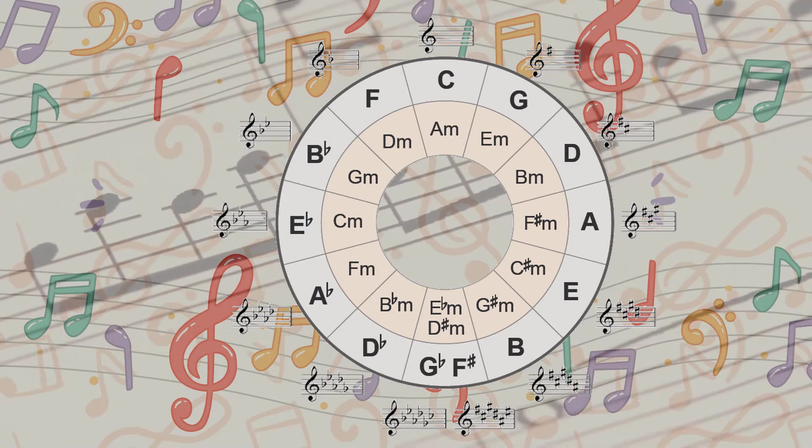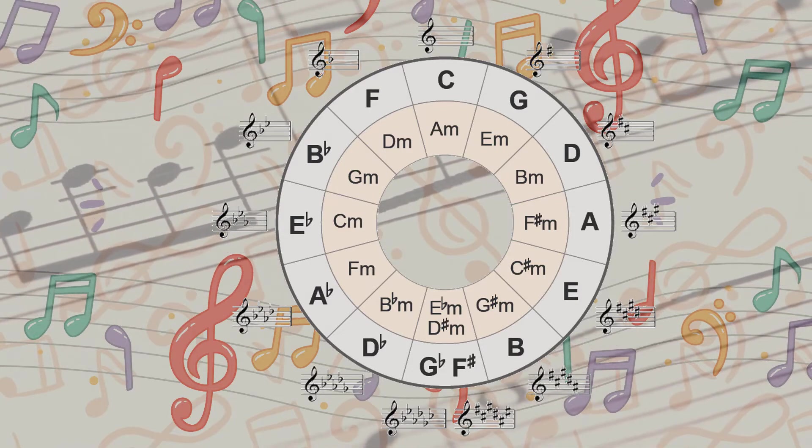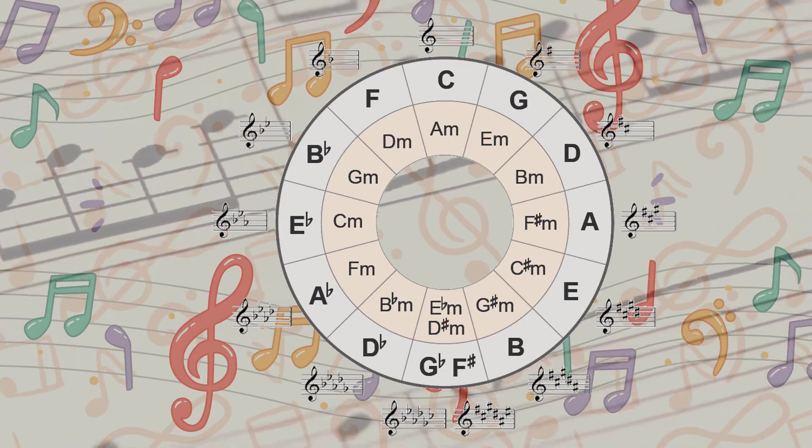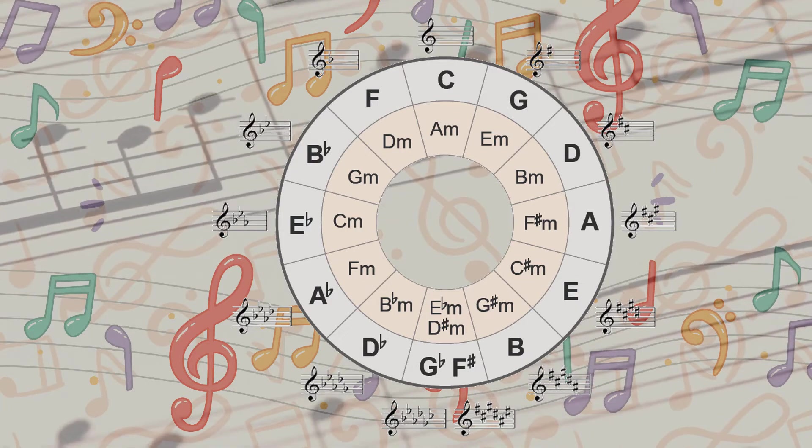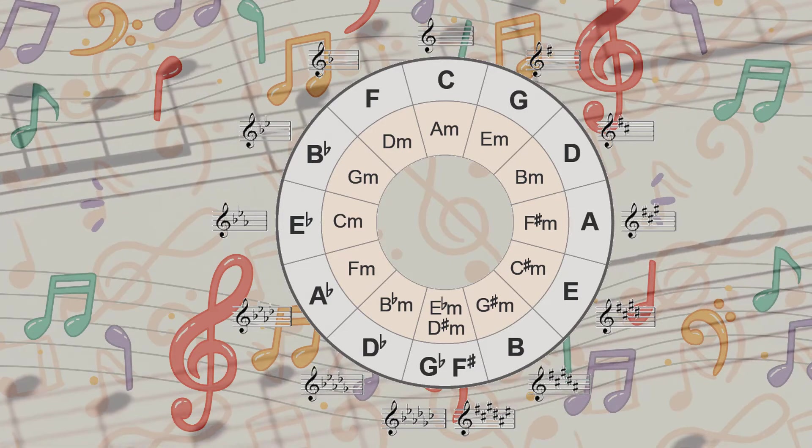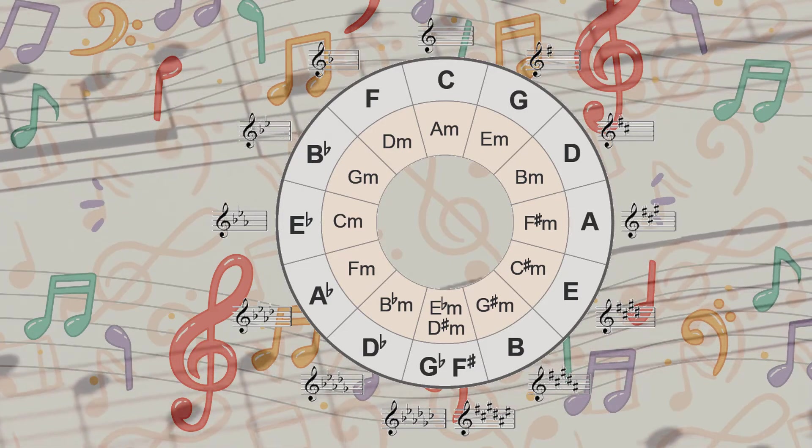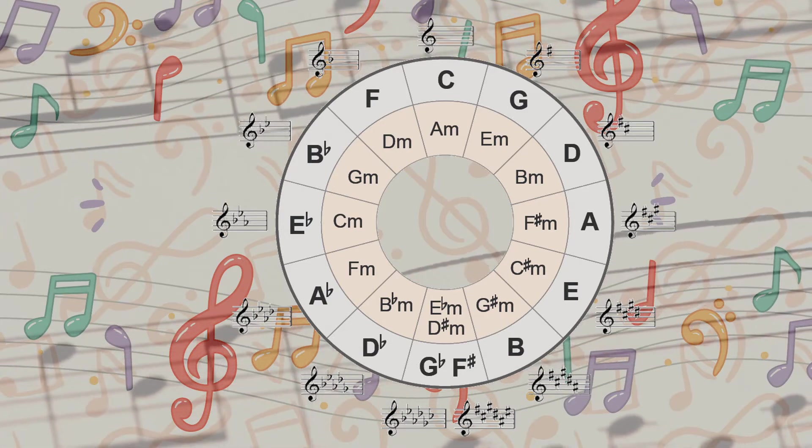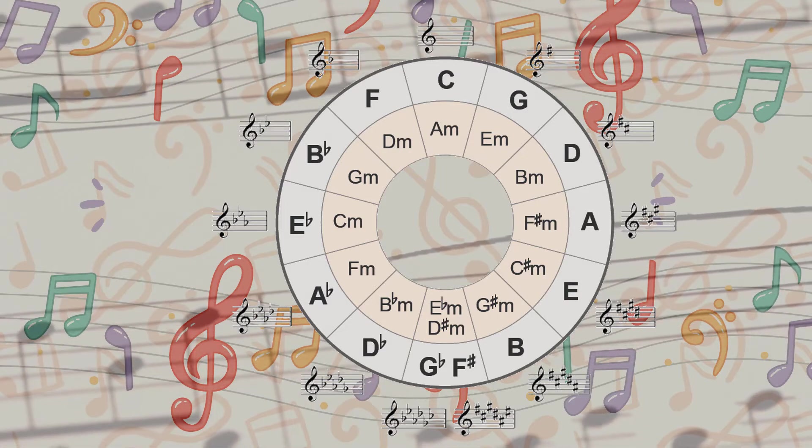However, the circle of fifths doesn't merely show us the key signatures. It can be used as a great help for harmonizing, composing, and transposing songs. If we view the key centers as chords, the general rule is that the closer two or more chords are within the circle, the more related they are. Conversely, the further you move away from one chord in the circle to another, the more unrelated or out it will sound.